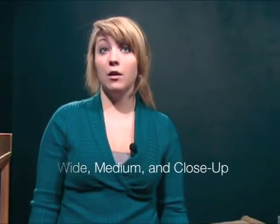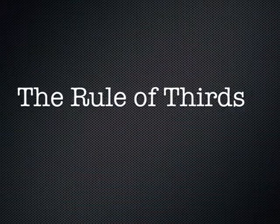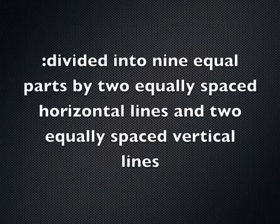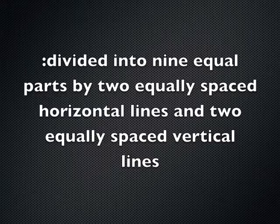The rule of thirds is a compositional rule of thumb for filming. The rule states that an image should be imagined as divided into nine equal parts by two equally spaced horizontal lines and two equally spaced vertical lines, and that important compositional elements should be placed along these lines or their intersections.